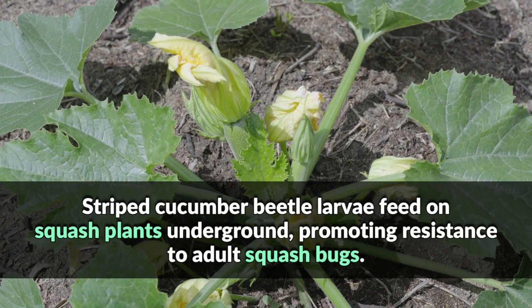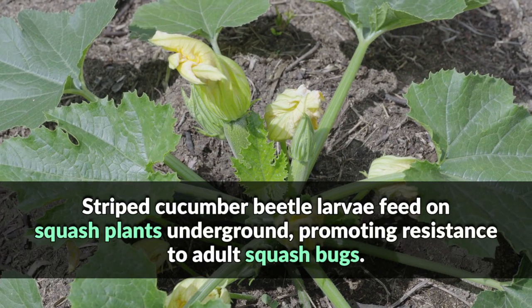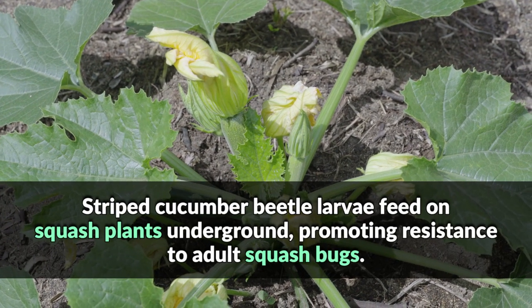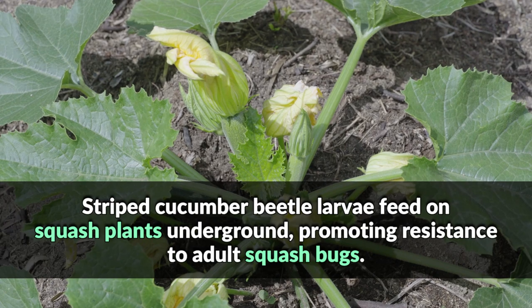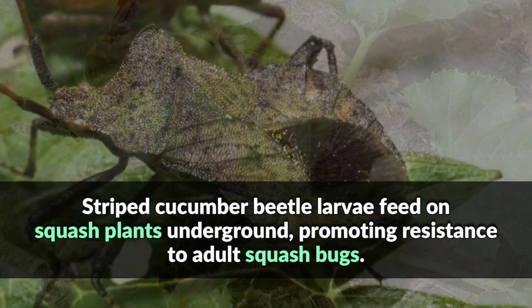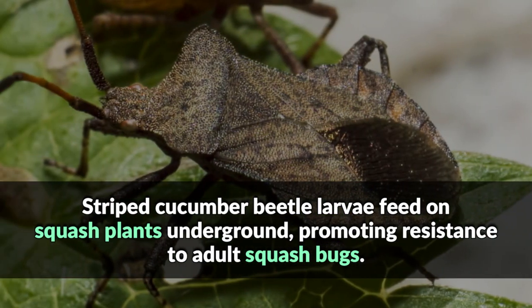Striped cucumber beetle larvae feed on squash plants underground, promoting resistance to adult squash bugs.